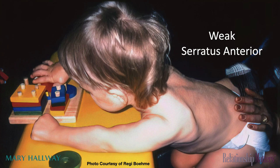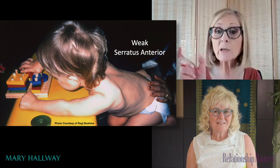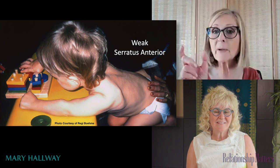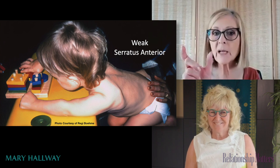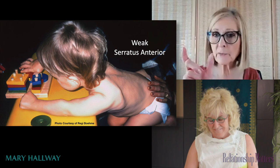Even the inferior angle. This is a child who has neurodiversity. And again, what you can see is they actually have weak serratus, but they also have some muscles that are tight, so it's pulling in a different direction.